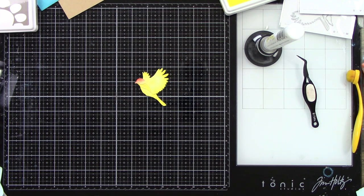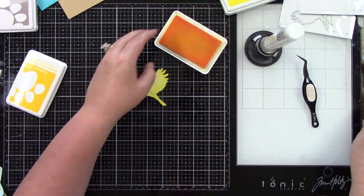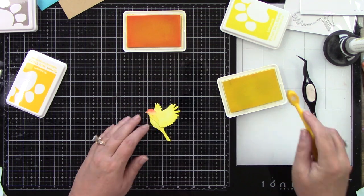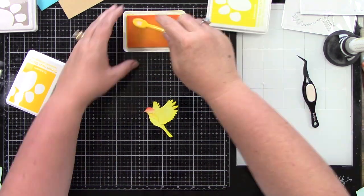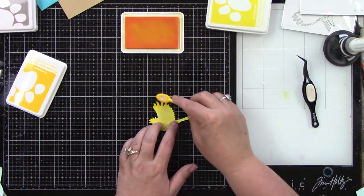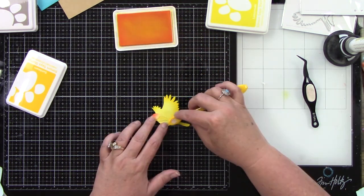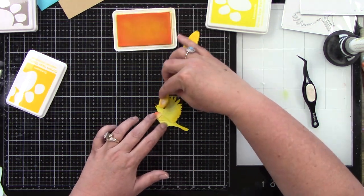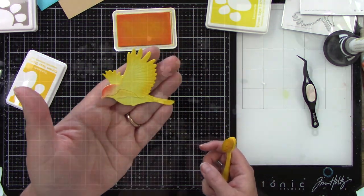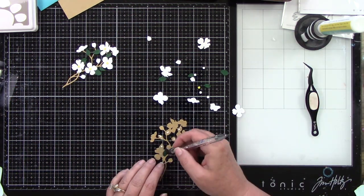This is where I thought it needs a little something extra, so I'm bringing in the Sunbeam ink and I'm going to blend that on the tips of the wings and on the tail. You can already see what a huge difference that makes, adding just a little more interest and detail to the bird itself.